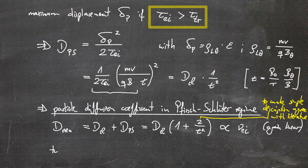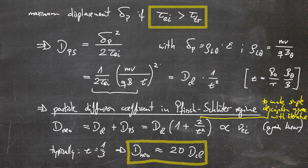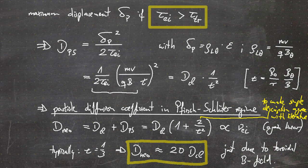What does that mean? If we assume a typical value of iota-bar of 1/3, then we get a neoclassical diffusion coefficient on the order of 20 times the classical diffusion coefficient. So the neoclassical diffusion coefficient is larger by a factor of 20 than the classical diffusion coefficient, and this is just due to the toroidal magnetic field geometry — quite significant.